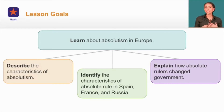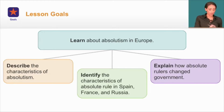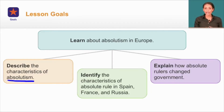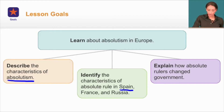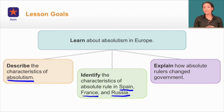Our goals in today's lesson are to learn about absolutism in Europe. By the end of the lesson, we'll be able to do three things: describe the characteristics of absolutism, identify characteristics of absolute rule in Spain, France, and Russia, and explain how absolute rulers changed government.